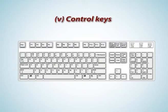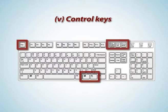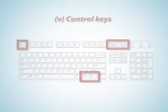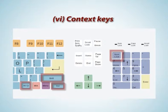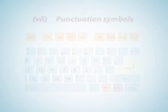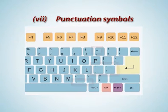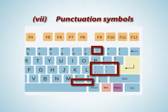5. Control keys: Escape, system request, print screen, pause, break, menu, win, scroll lock, etc. 6. Context keys: Number lock, shift, control, alt. 7. Punctuation symbols: comma, full stop, semicolon, colon, single and double quotes, and dash.